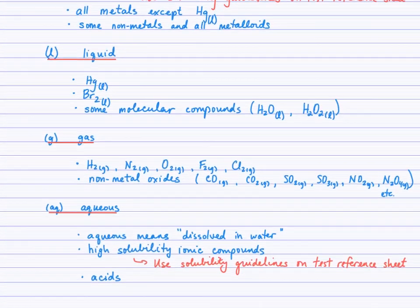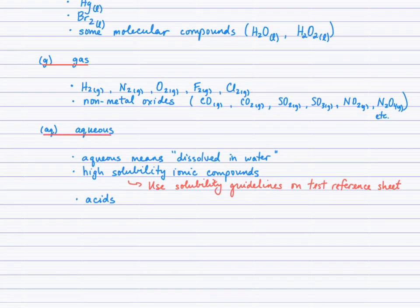G stands for gas, and you'll remember the other diatomic elements that are also gases. Hydrogen gas, nitrogen gas, oxygen gas, fluorine, and chlorine. So, when these elements appear on their own as reactants or products, they are diatomic, and they are gases.